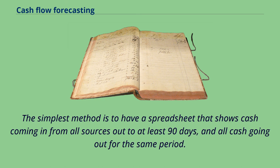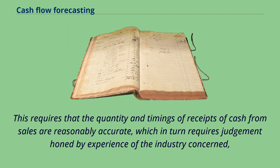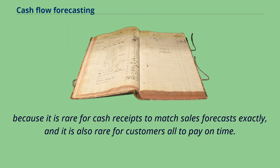The simplest method is to have a spreadsheet that shows cash coming in from all sources out to at least 90 days, and all cash going out for the same period. This requires that the quantity and timings of receipts of cash from sales are reasonably accurate, which in turn requires judgment honed by experience of the industry concerned, because it is rare for cash receipts to match sales forecasts exactly, and it is also rare for customers all to pay on time.